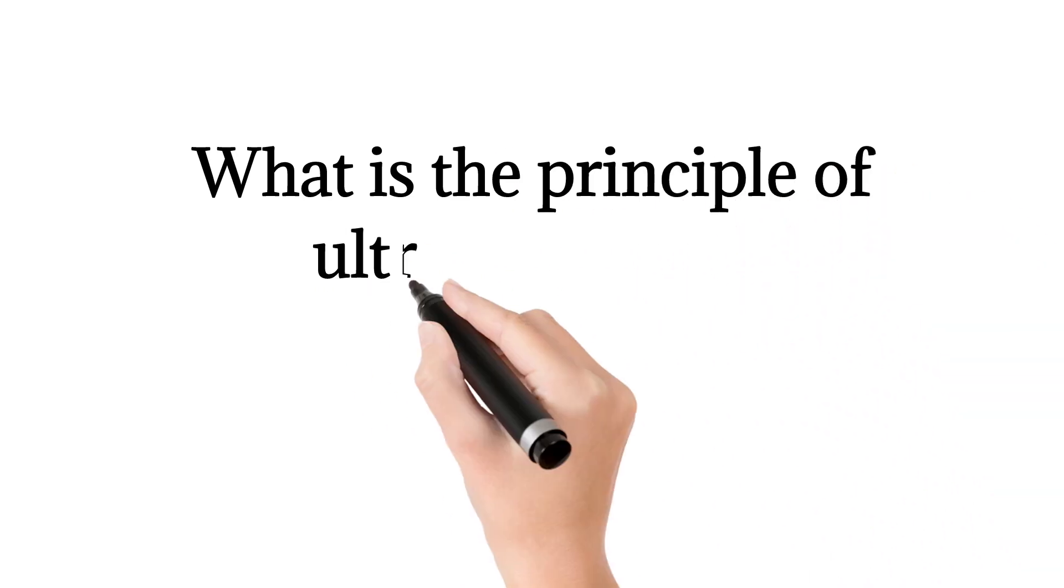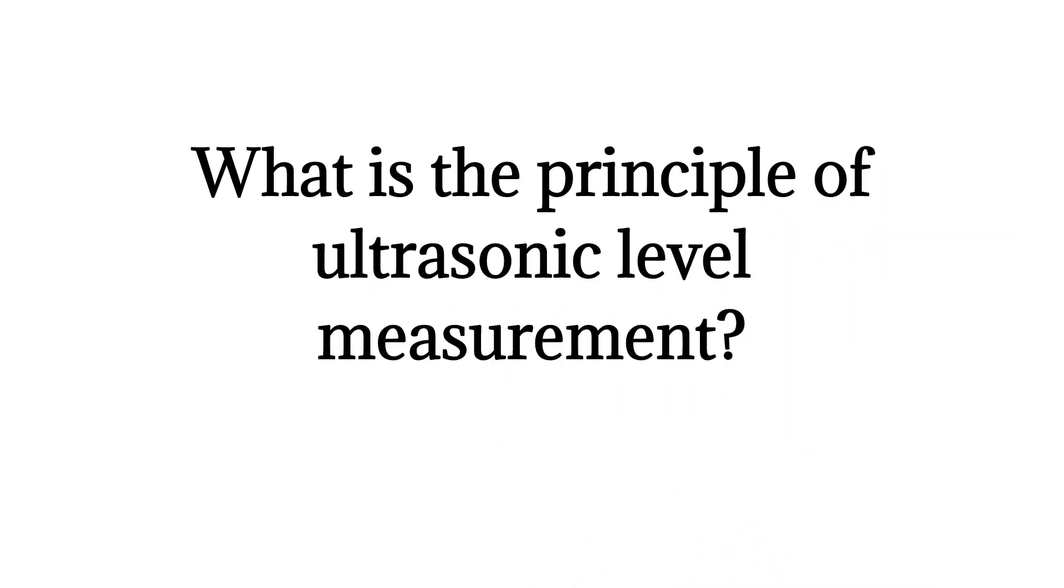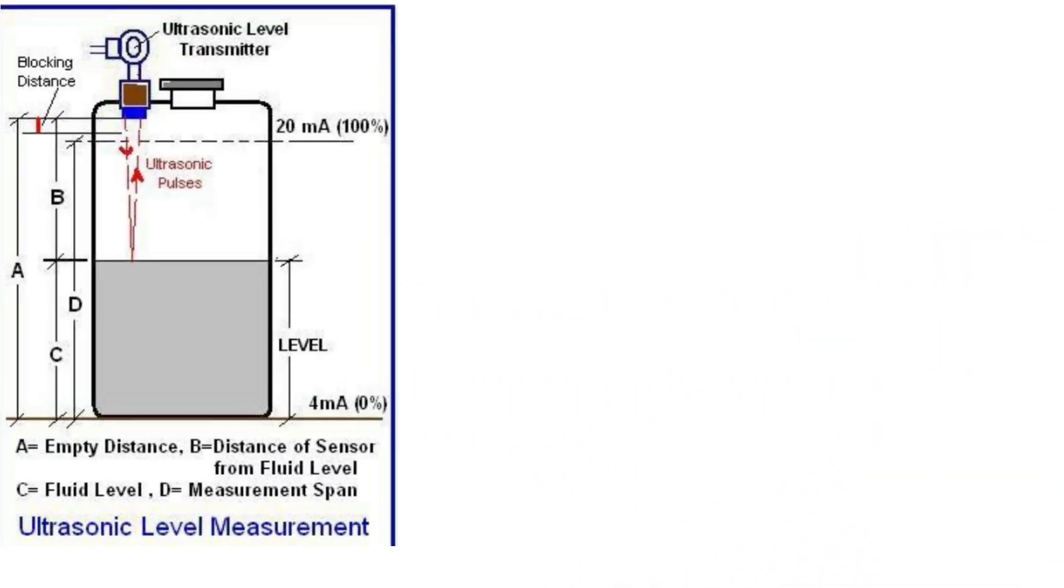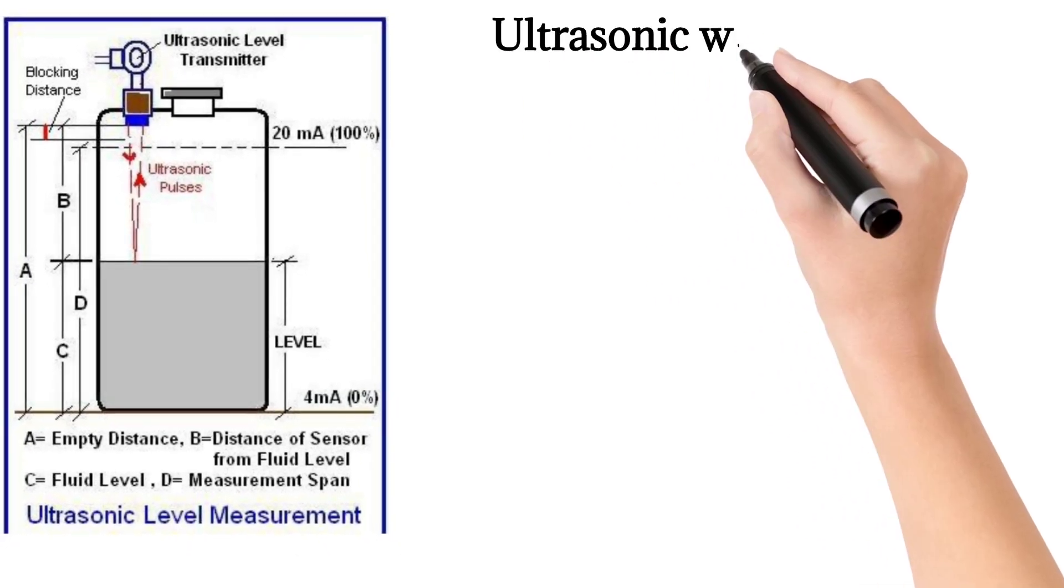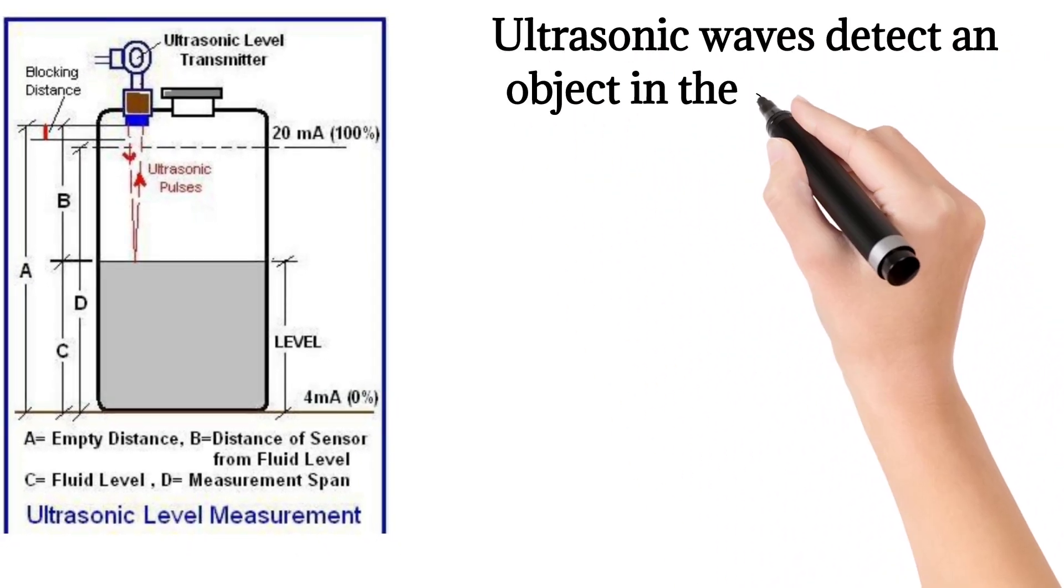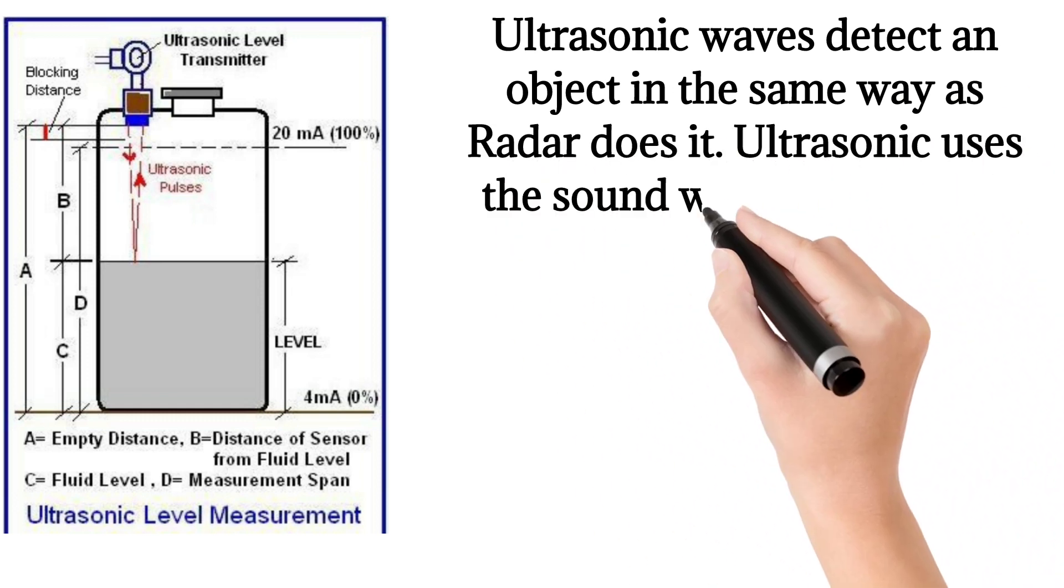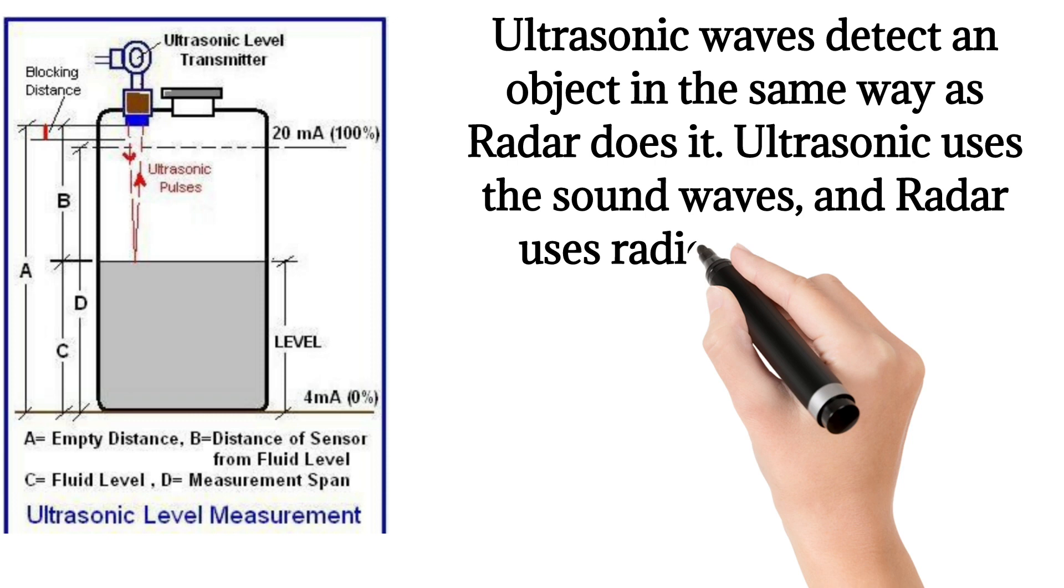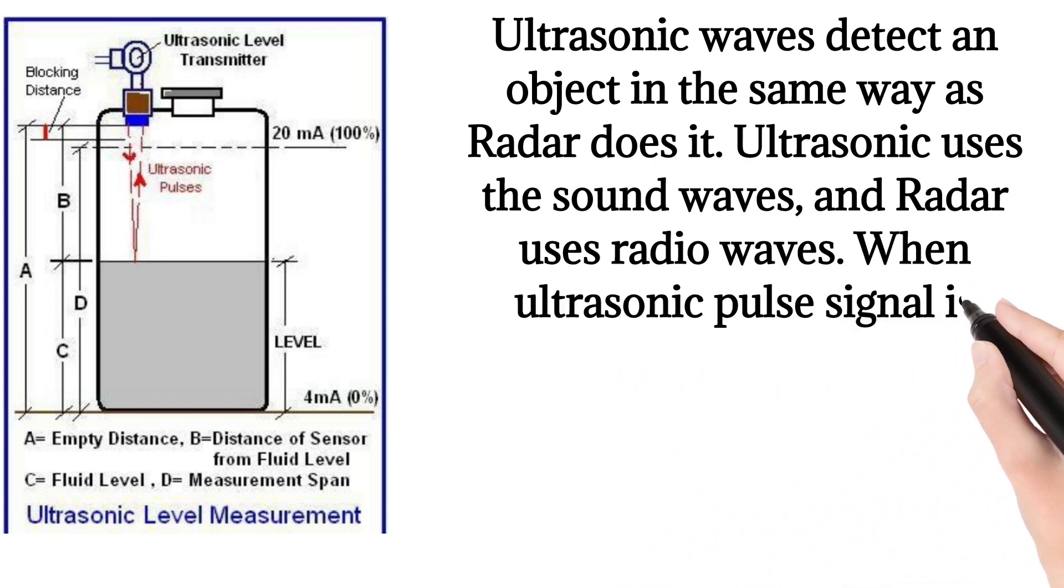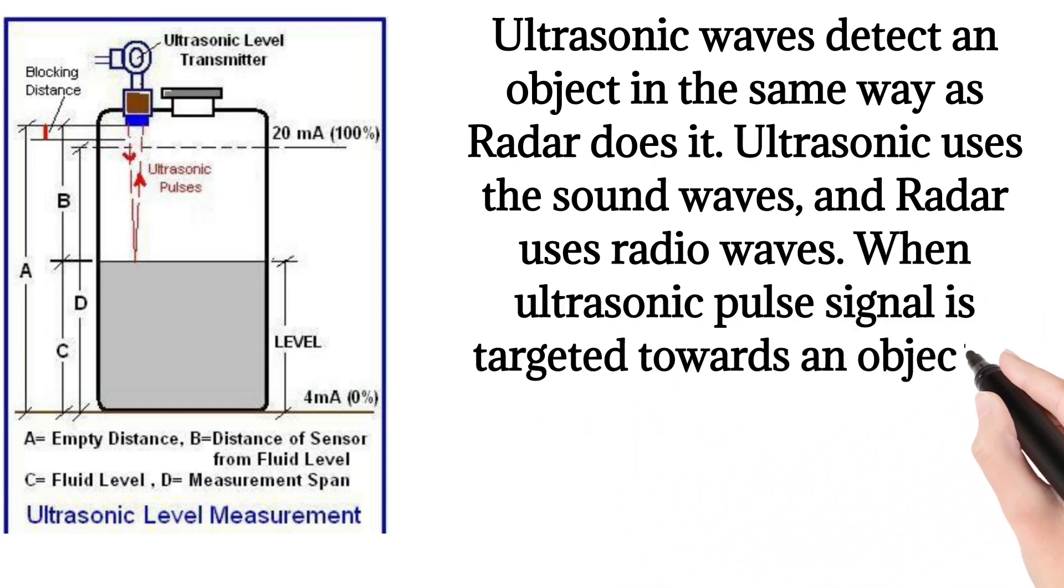What is the principle of ultrasonic level measurement? Ultrasonic waves detect an object in the same way as radar does it. Ultrasonic uses sound waves, and radar uses radio waves. When an ultrasonic pulse signal is targeted towards an object, it is reflected by the object and the echo returns to the sender.